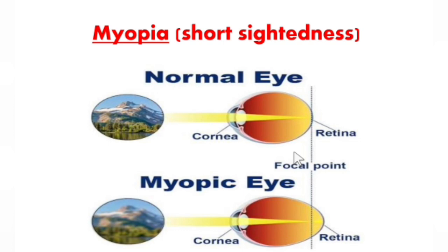First is myopia. Myopia is generally referred to as short sightedness. A person suffering from myopia is able to see near objects clearly, while distant objects appear blurred.